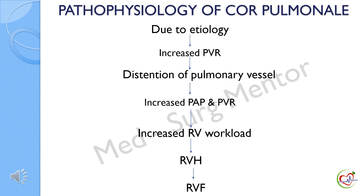Now let's move on to the pathophysiology of cor pulmonale. Due to etiological factors like lung disease, there is a rise in pulmonary vascular resistance, leading to distension of the pulmonary vessels. Gradually, pulmonary arterial pressure and pulmonary vascular resistance increase — a condition called pulmonary hypertension — causing increased right ventricular workload, and finally leading to right ventricular hypertrophy and failure.